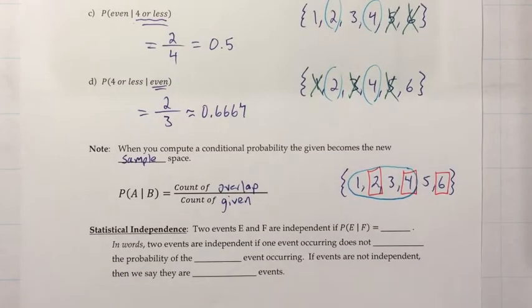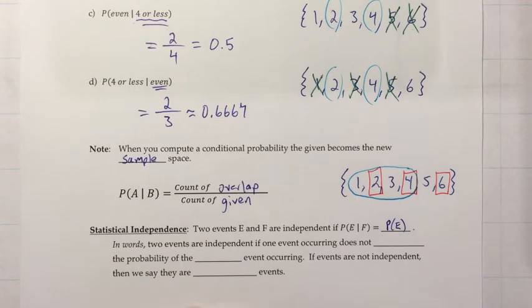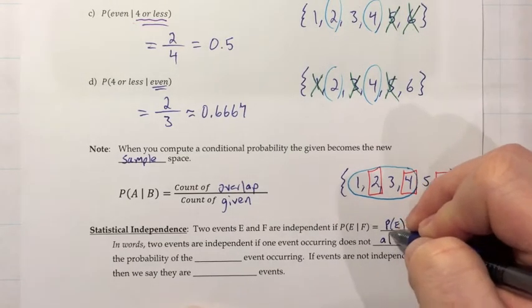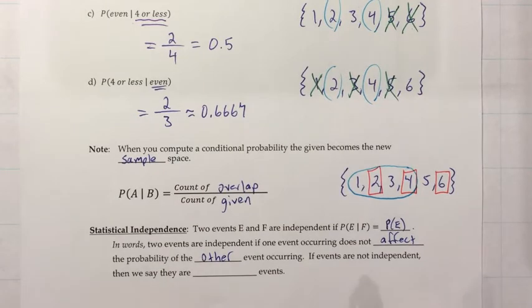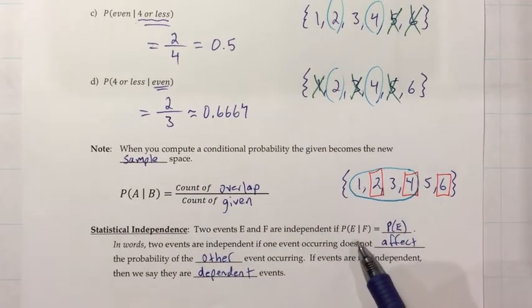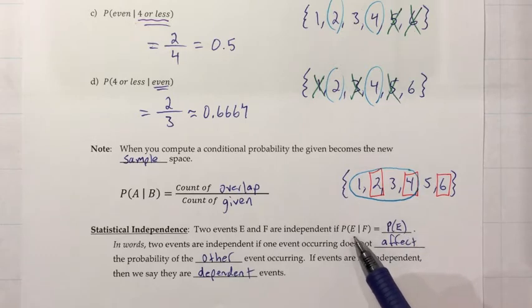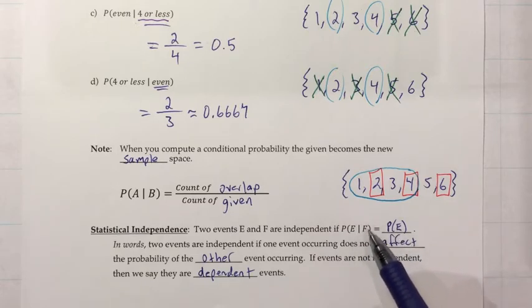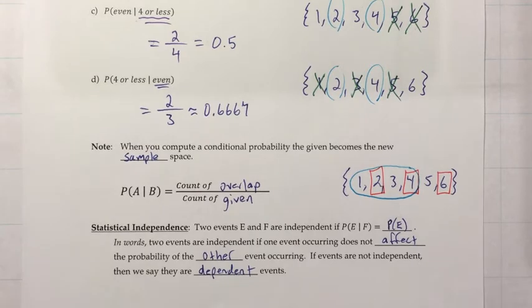All right, another topic, statistical independence. Two events, E and F, are independent if the probability of E given F is the same thing as the probability of E without the given of F. In words, two events are independent if one occurring does not affect the probability of the other event occurring. So if events are not independent, then we say they are dependent. That does show up in the probability that they don't affect each other, because we're saying, somebody asked, what's the probability of E? And we would give an answer to that. And then they go, oh, wait, I forgot to tell you. I actually wanted the probability of E given F. And we're saying, oh, it's the same answer either way. So it has the implication that the given isn't making a difference in the probability. And if that's the case, we say those events are independent from each other. So we'll see a good example of that on the next page.